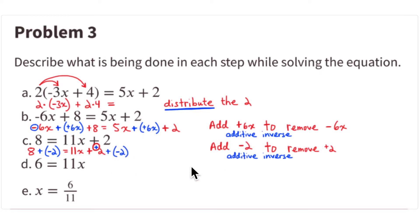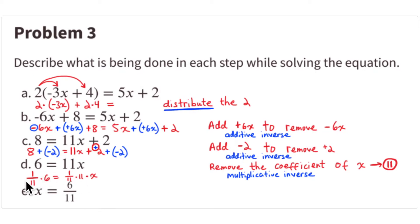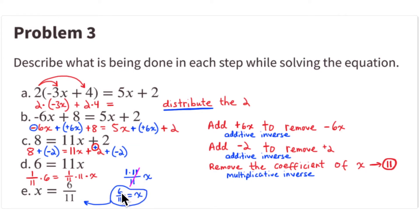8 plus -2 equals 6, so 6 = 11x. The +2 and -2 cancel to zero, again using the additive inverse. Now to get rid of the coefficient 11, multiply by 1/11. One eleventh of 11 things is 1 — the 11s cancel — so 1/11 of 11x is just x. And 1/11 of 6 is 6/11. So x = 6/11.